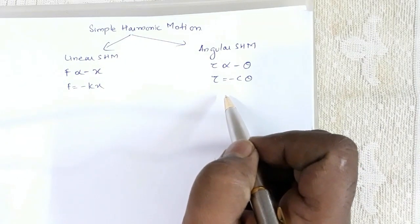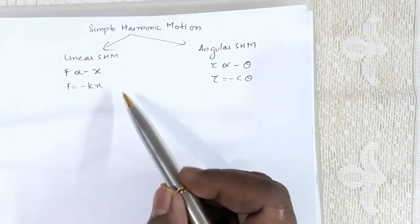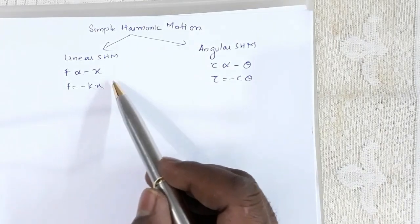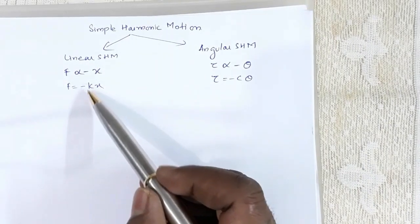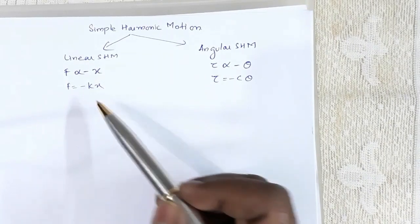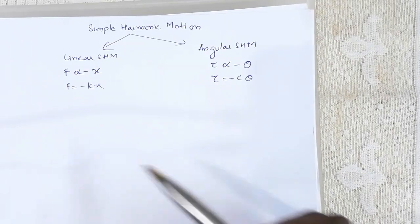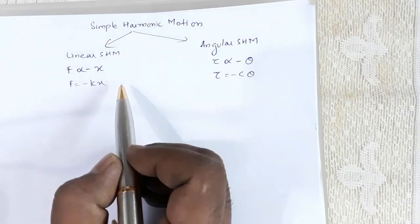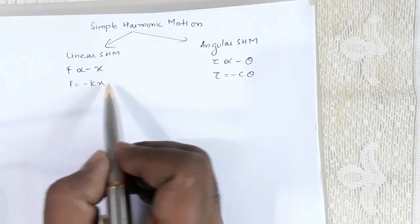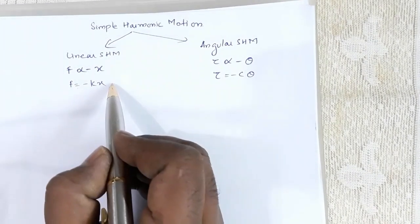Both k and c are constants and they depend on the nature of the material. For example, in a spring-mass system, k will depend on the nature of the spring.